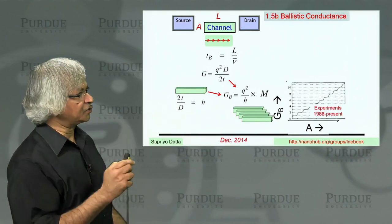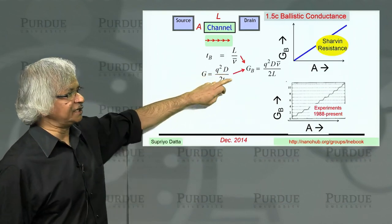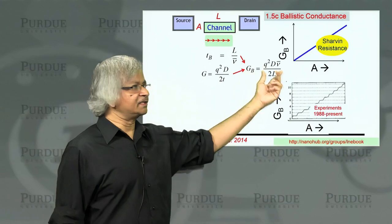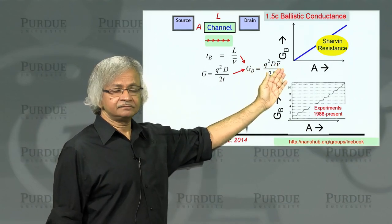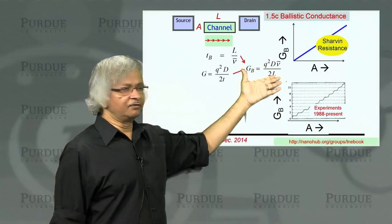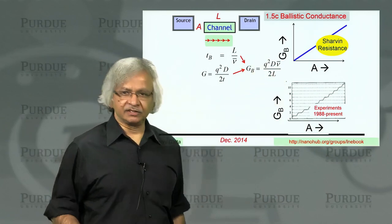This is what we'll talk about in the next unit. For the moment, let's just go back to the old result, which is the ballistic conductance is given by this product of density of states and the velocity. And this is the Sharvin resistance.